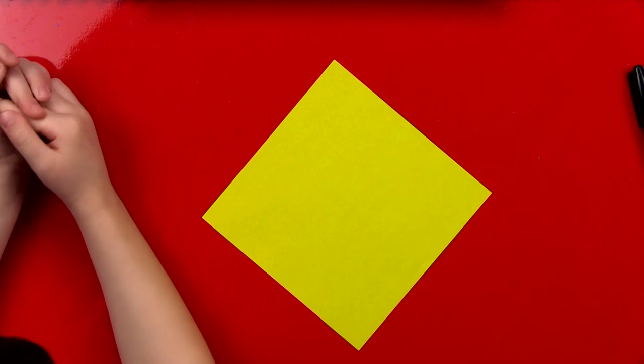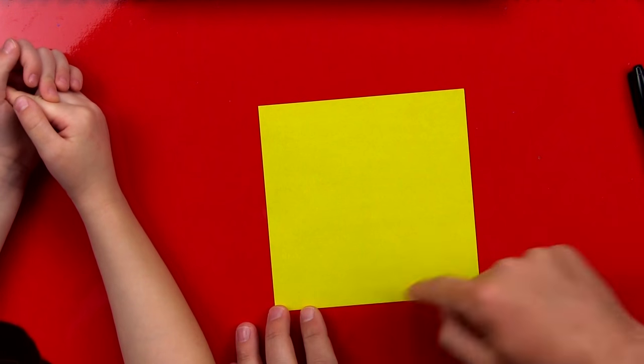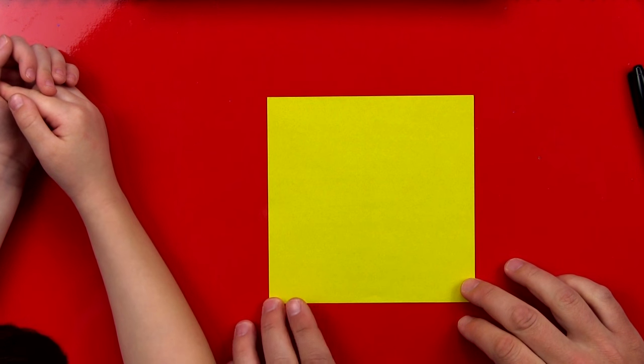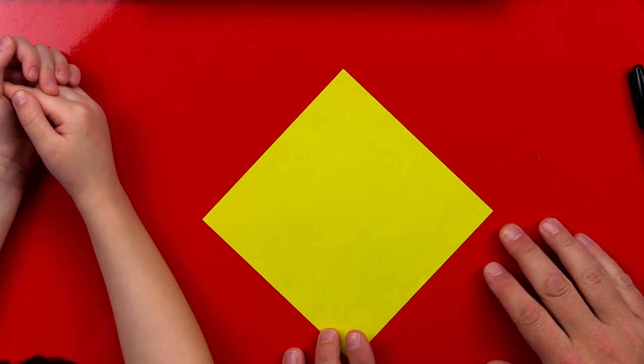That's gonna make it a lot easier if we do it as a team. Okay, we're first gonna start with our paper as a diamond. Which shape is this? Diamond. Wait, square. It's a square and a diamond. Now it's a diamond, yeah.